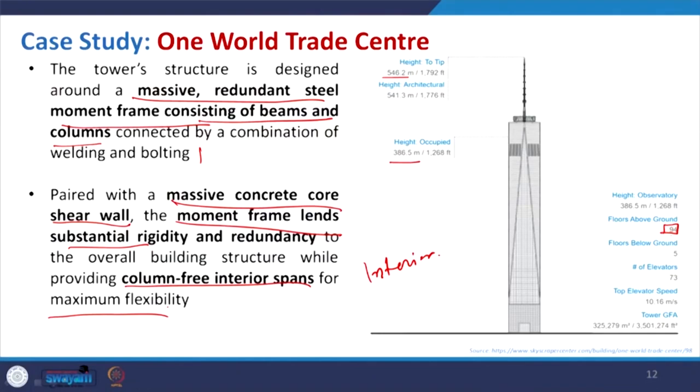In this case, flexibility is always a problem for structures where we use the exterior system. Whenever you use heavy columns or very closely spaced columns like tube structures, that hinders the external view. Also, if you have a very regular frame structure with columns at regular intervals, the interior space will have constraints — we cannot get a column-free space. Whereas in this case, a huge massive core is used so that the requirement for other columns can be reduced and the interior space can be used in a better way. That is the point of this kind of frame-and-core structure.